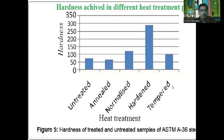The hardness achieved in different heat treatment processes is shown in a bar chart for hardness of treated and untreated samples of ASTM A36. On the y-axis is hardness and on the x-axis are the different processes. The untreated sample has a hardness value of nearly above 70. For annealing, hardness is about 55. For normalizing, hardness is more than 100. For quenching or hardening, hardness is rapidly increased to nearly 300. For tempering — arts tempering or mass tempering — the hardness achieved is equal to about 100.